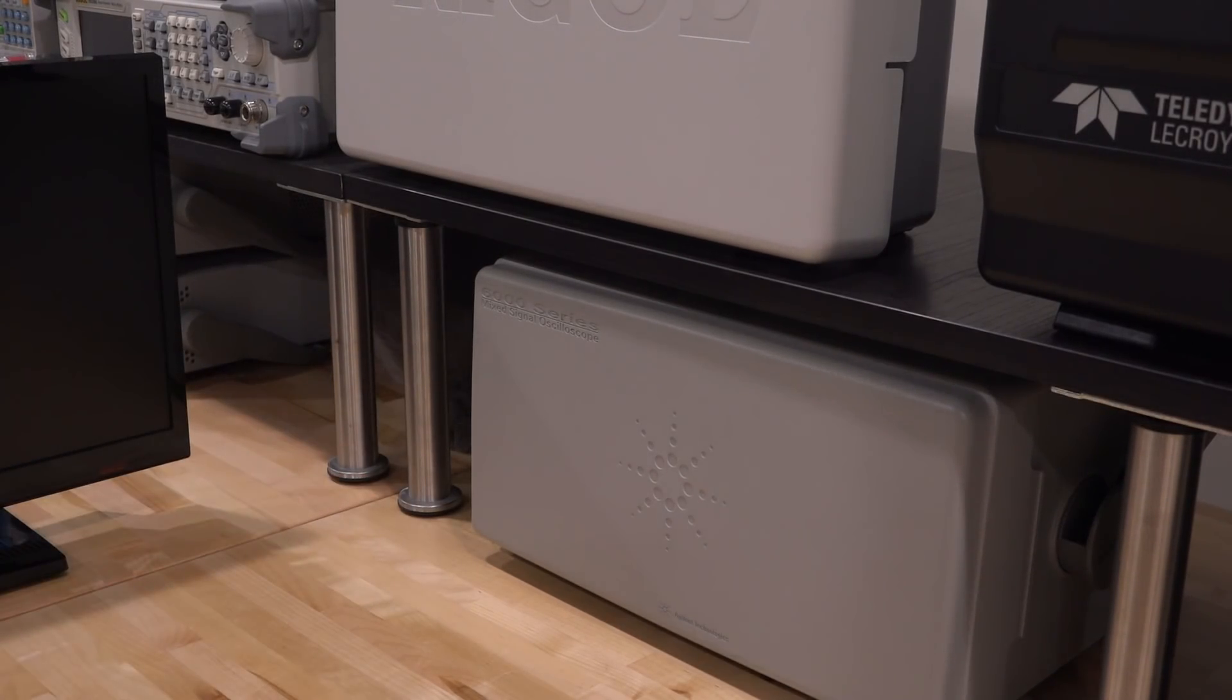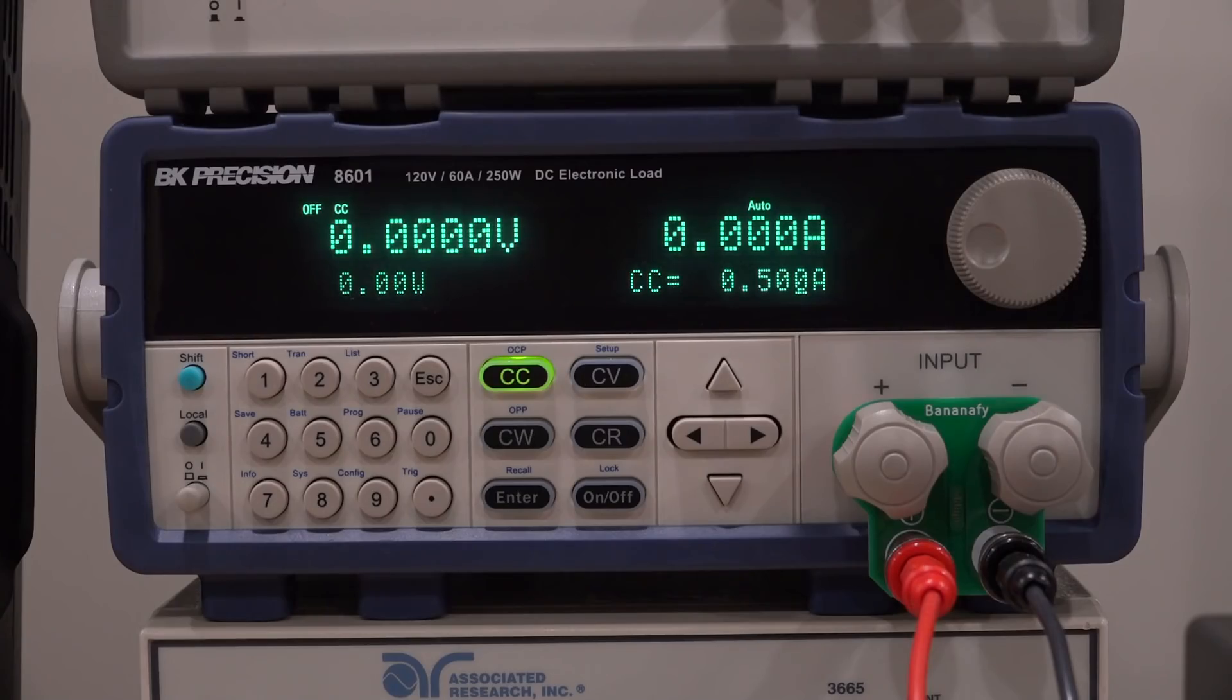So let's slowly turn this up, and you got 10, 20, 30, 40, 50, and 60. Yeah, looks good. So I'm reading 60.054 on the BK Precision and 60.09 on the instrument.